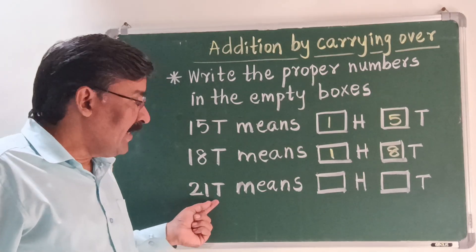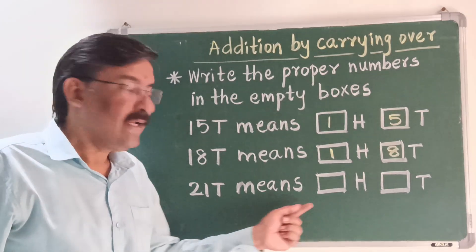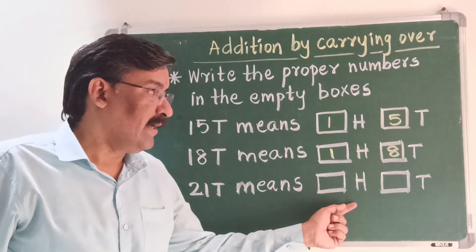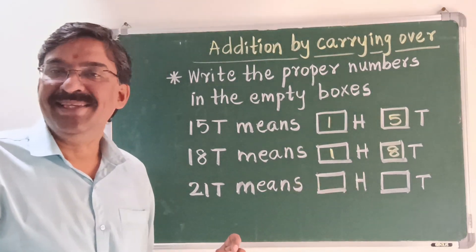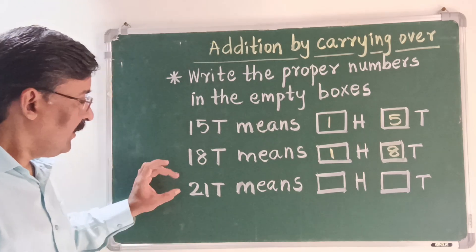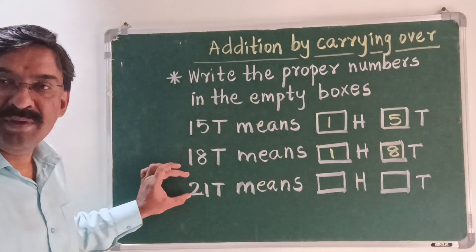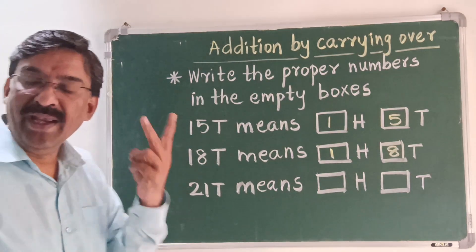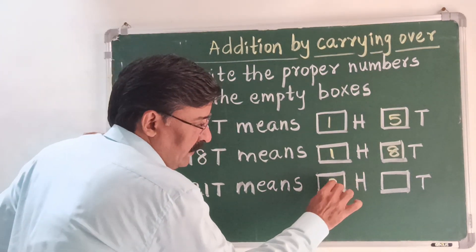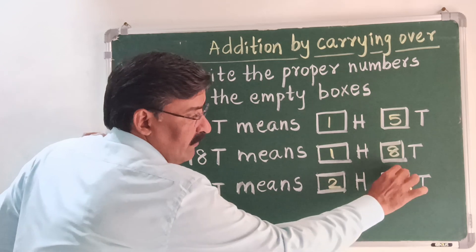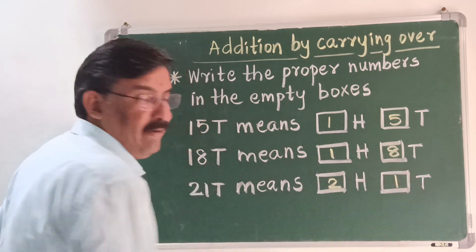21 tens means dash hundreds and dash tens. 21 — 20 tens will make 200, and what will be left? 1 ten.